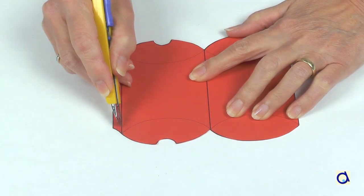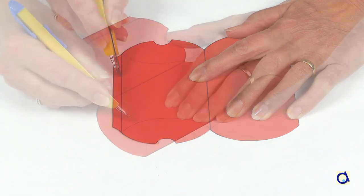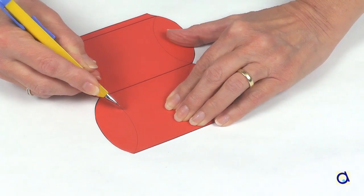Then, take an X-Acto knife and score the long folds of the box as well as the curved folds that will form the flaps of the box.